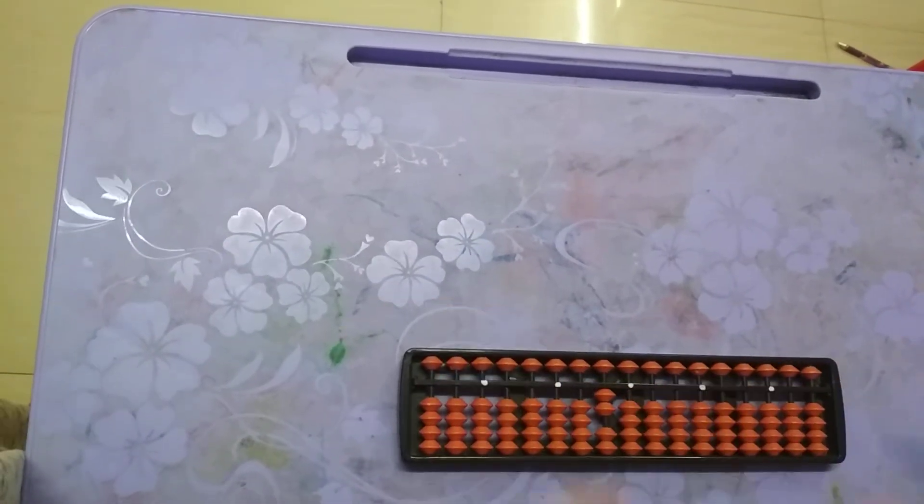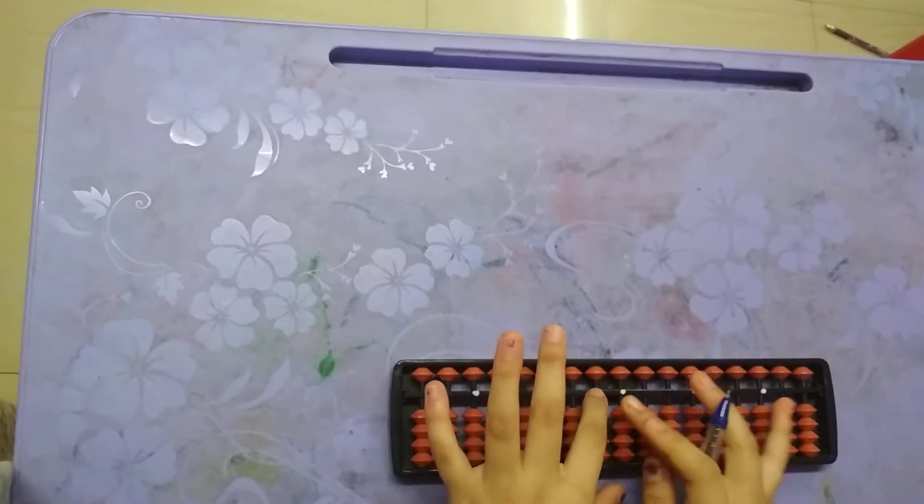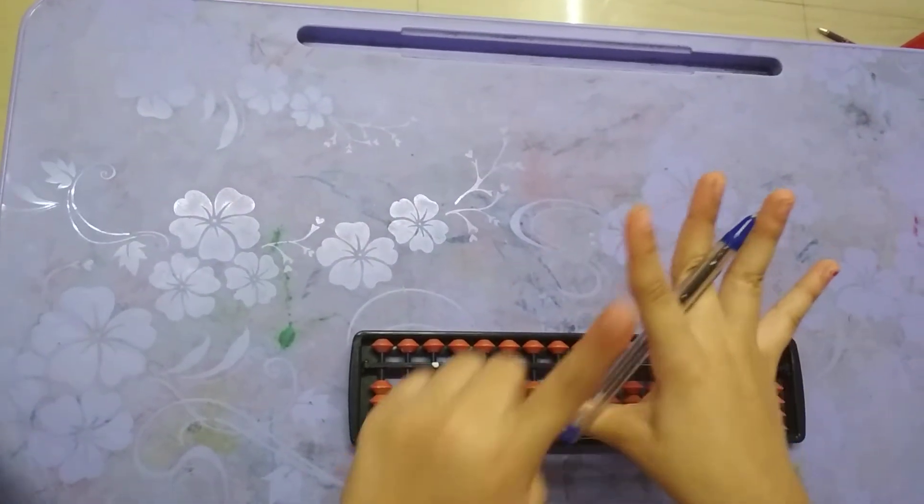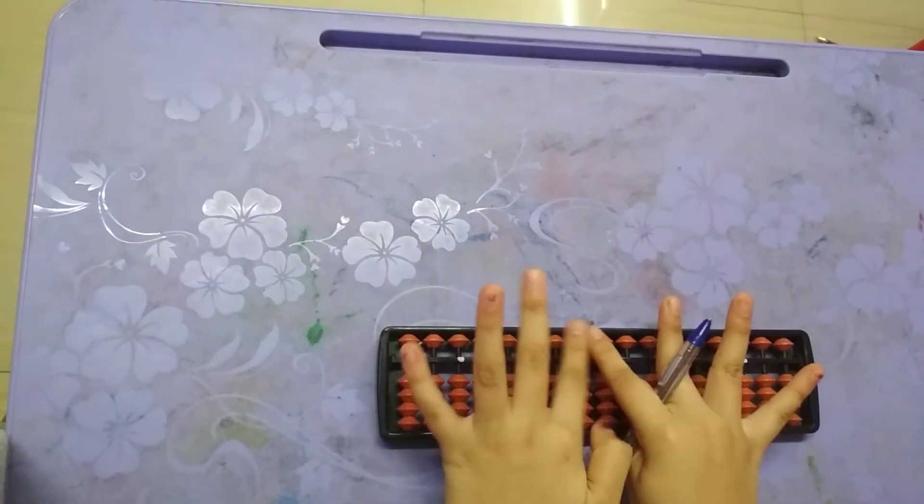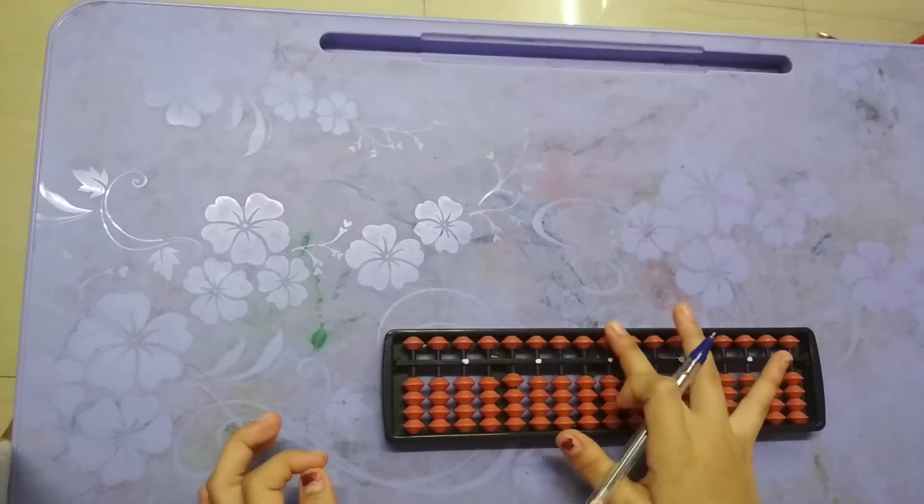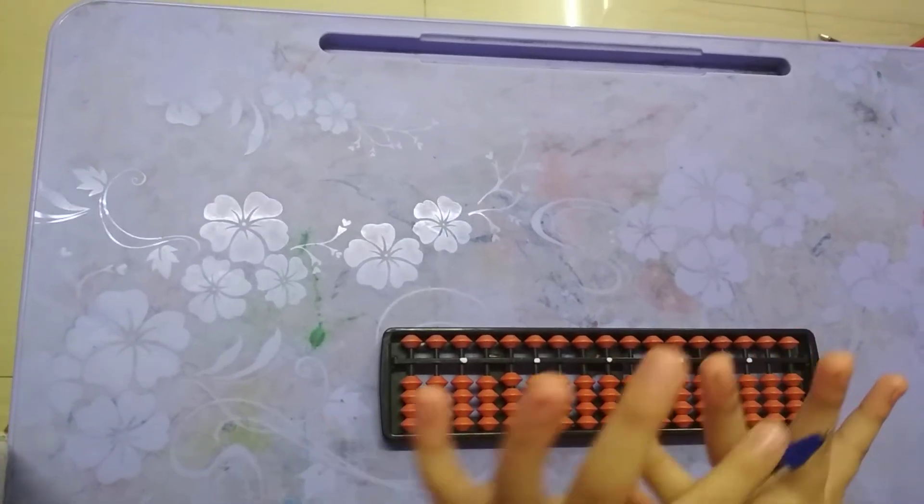The fingers we are going to use are thumb, index finger, and middle finger. Can you see these upper beads here? We are going to use the middle finger. Up, down, up, down—we use the middle finger.